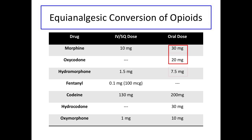Here's another example. The table tells us that 7.5 milligrams of hydromorphone is equivalent to 30 milligrams of oral morphine. If a patient is taking 20 milligrams of oral hydromorphone daily, convert that to OME by multiplying by 4. Therefore, 20 milligrams of oral hydromorphone is equivalent to 80 OME.